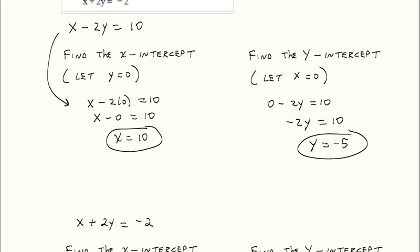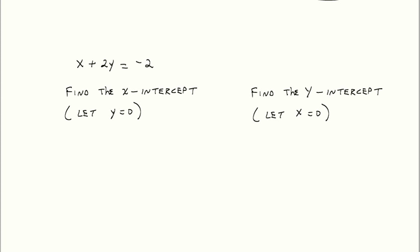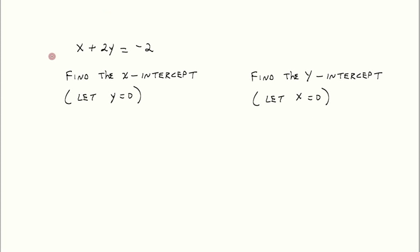All right, we do the same thing with the next equation, which was x plus 2y equals negative 2. So where does it cross the x-axis? Well, we don't know, but we know the y-value is going to be 0 there. So plug in y equals 0. x plus 2 times 0 equals negative 2. So that means x equals negative 2. So it crosses the x-axis at negative 2.